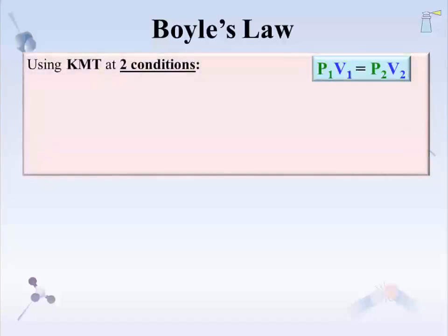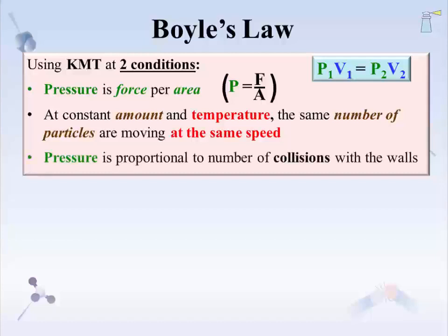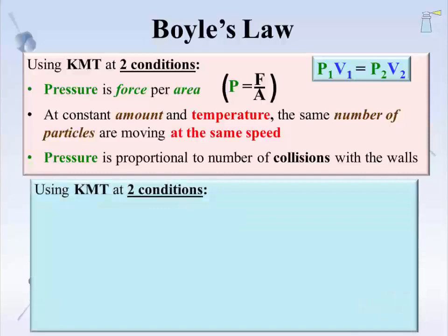But why does the law take this form? The law could be rationalized using the Kinetic Molecular Theory at two conditions. Often the best way to consider gas behavior is to focus on pressure — it is force per area. Another factor to consider is what is meant by keeping certain properties constant. For constant amount and temperature, it means that in both conditions — before and after — the same number of particles are moving at the same speed. Pressure is proportional to the number of collisions with the walls of the container. With these considerations, Boyle's law can be rationalized.